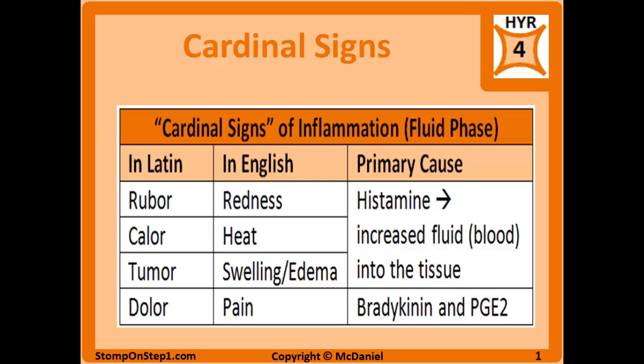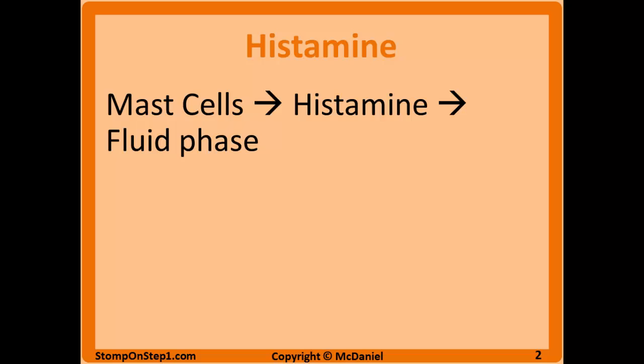The most important signals for pain are bradykinin and PGE2 (prostaglandin E2), which we'll cover in more detail later in this video. Histamine is released from mast cells in response to cellular injury, complement activation, or membrane-bound IgE being cross-linked by antigens. Histamine then increases venule permeability, dilates the arterioles, and prepares the vessel walls for neutrophil extravasation, leading to the fluid phase of acute inflammation and three of those cardinal signs.